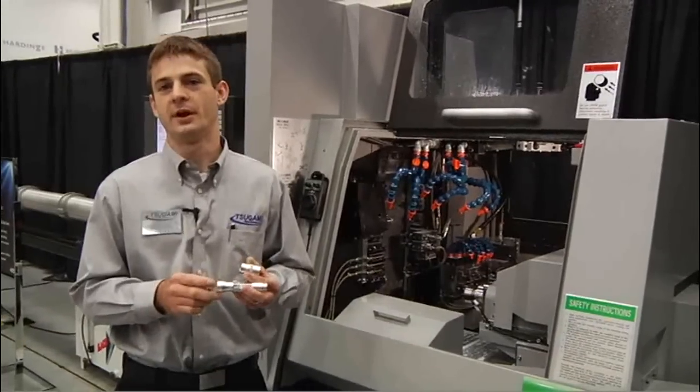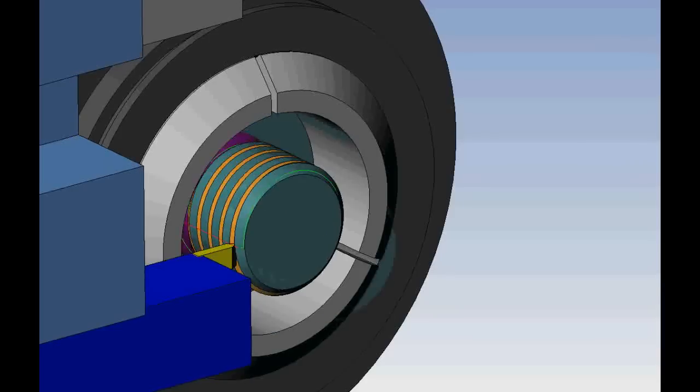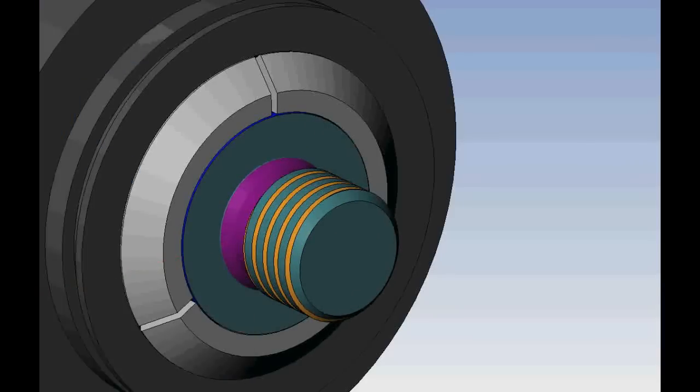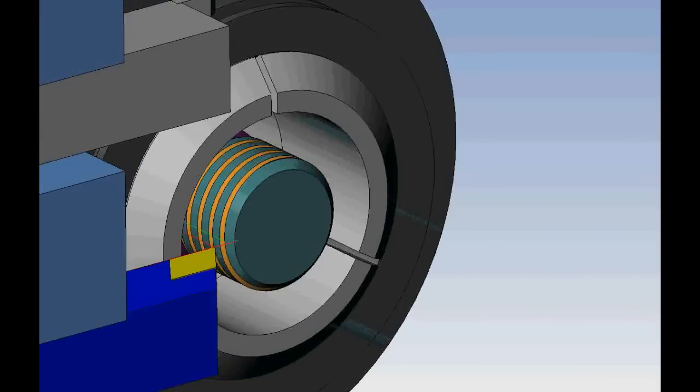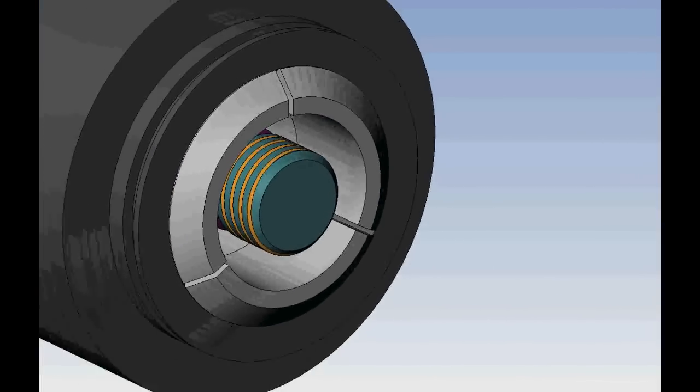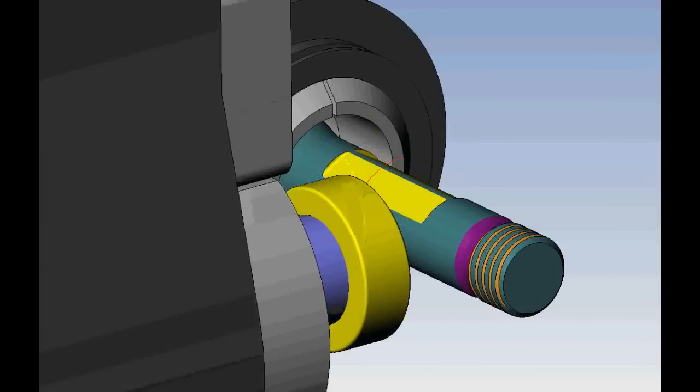This particular part here has about a cycle time of six minutes making all three parts in the macro programming which also includes engraving on two of the parts. The machine set up here is a stock standard machine. There's no additional components other than the tooling that was placed in here to make the actual part.